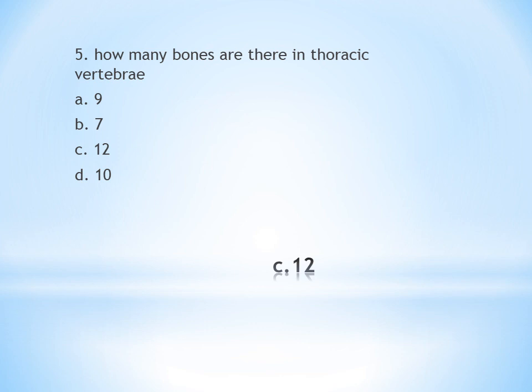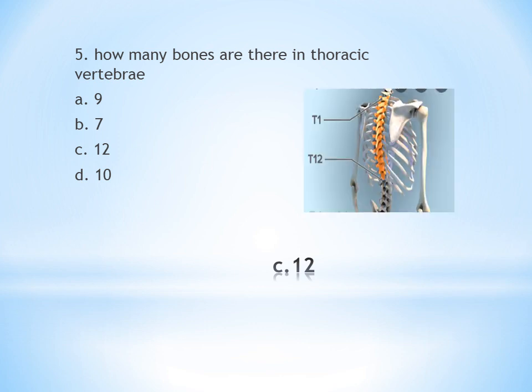There are 12 thoracic vertebrae, because T1 to T12 are the 12 thoracic vertebrae.